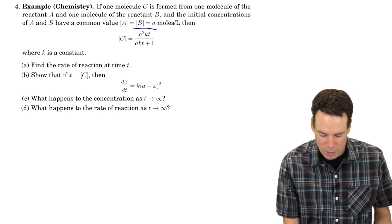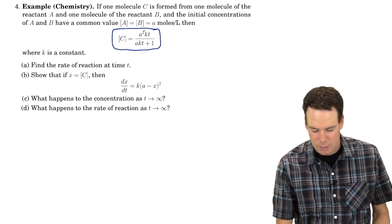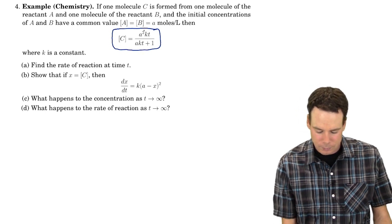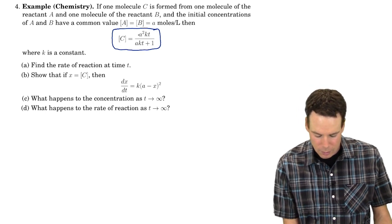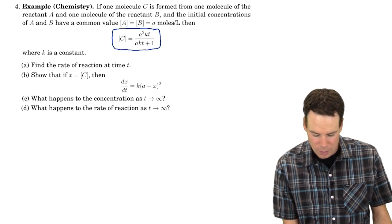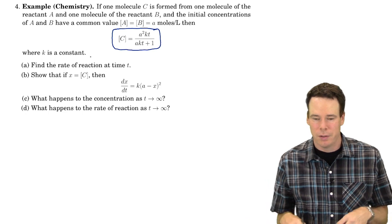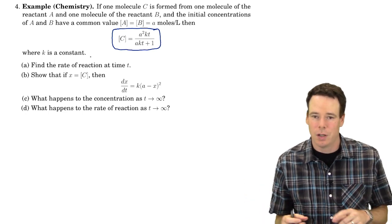And suppose the initial concentrations of A and B have a common value of A moles per liter. Then the concentration of this product C is given by this function of T. Here A, as you can see above, that's the original concentration of our reactants A and B. K, it's just some constant.